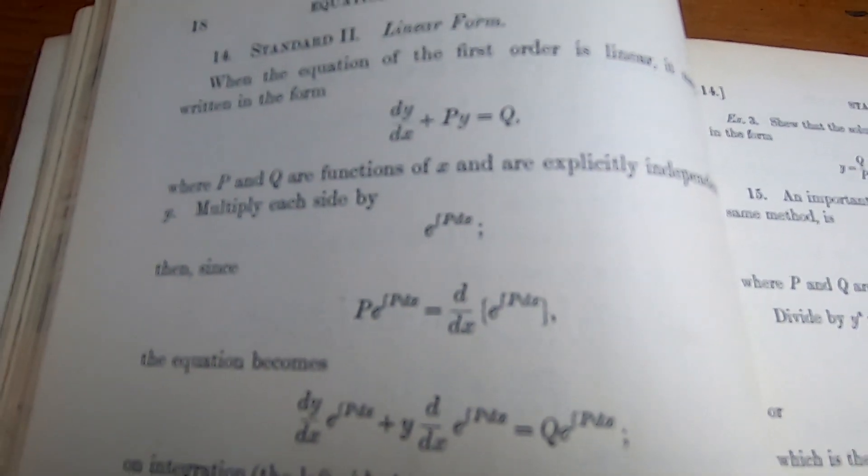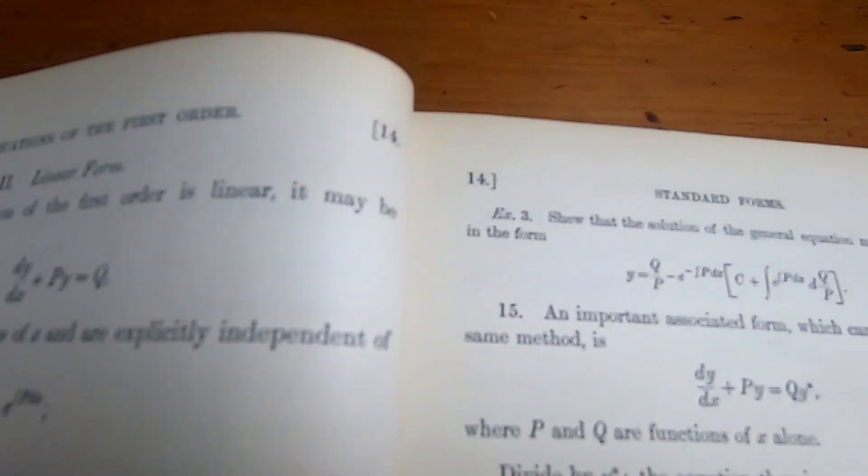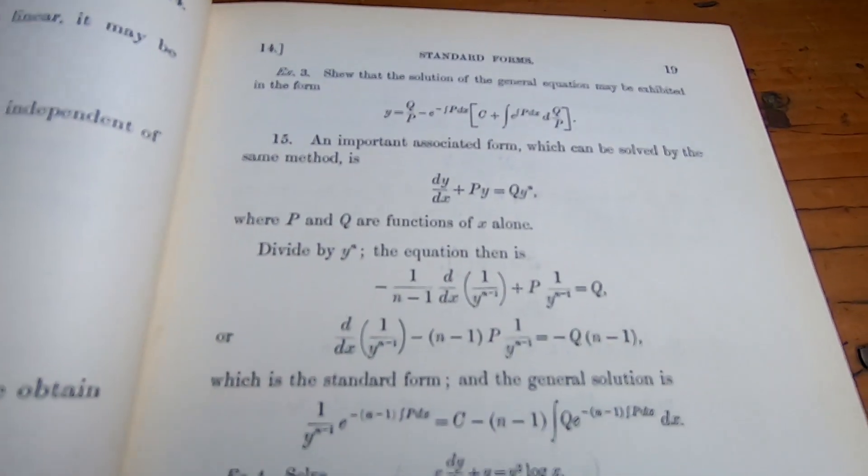So nothing has changed in however many years it's been since 1888. So math is undying. And in this book, you can see how it was the same back then as it is today.